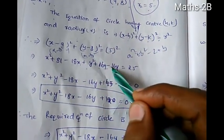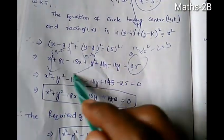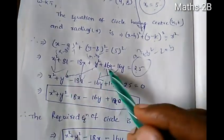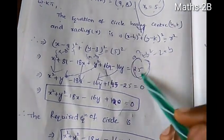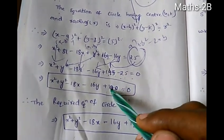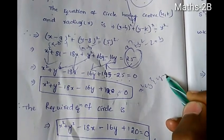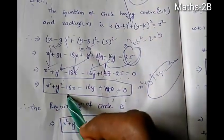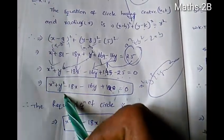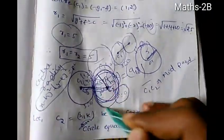Expanding: x² + y² - 18x - 16y, then 81 + 64 = 145, minus 25 gives 120. So the second circle equation in general form x² + y² + 2gx + 2fy + c = 0 becomes x² + y² - 18x - 16y + 120 = 0.